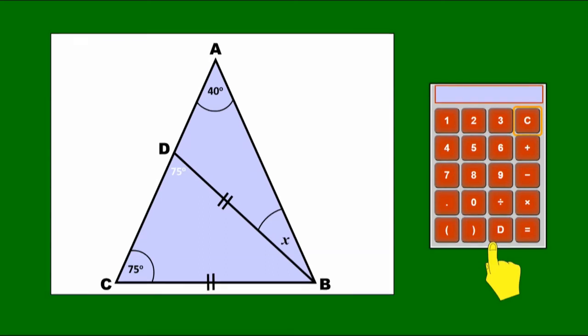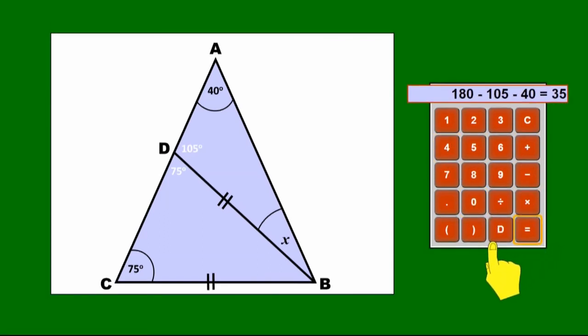And now let's look at angle ADB. That is on a straight line with that 75 degree angle, so they must add up to 180. So subtracting 75 from 180 gives that angle to be 105 degrees. And now just looking at the top triangle ADB, we know two of the angles. So we can work out 180 minus 105 minus 40 equals the angle X must equal 35 degrees.